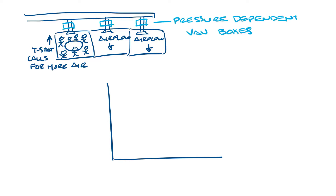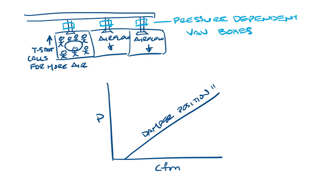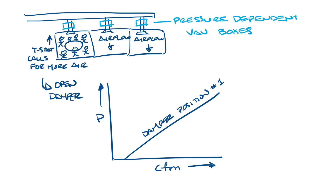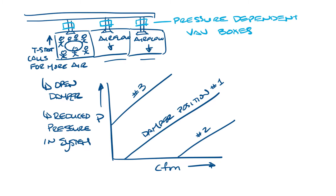If you were to graph airflow versus pressure in a pressure dependent VAV box, it would look something like this. For any given damper position, as the pressure goes up, the CFM goes up, and as the pressure goes down, the CFM goes down. So as the system pressure decreases, like in the example with these offices when the conference room damper opens, the airflow goes down. And if you had damper position two or three, the same thing would happen.